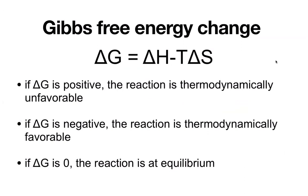When we talk about thermodynamic favorability, you should be thinking: Gibbs free energy change, or delta G. Remember that if delta G is positive, the reaction is thermodynamically unfavorable as written. If we're saying it's not favorable in the forward direction, then it's got to be favorable in the reverse direction. If delta G is negative, the reaction is thermodynamically favorable in the forward direction. And if your delta G is zero, the reaction is at equilibrium — there's no drive to do anything.